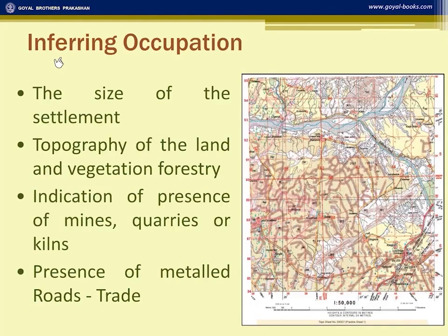Inferring occupation: when asked about the occupation of people in a given survey sheet, the answer is generally cultivation. However, if there is a lime kiln, brick kiln, or an annual fair, or a metal road, people could be engaged in trade.